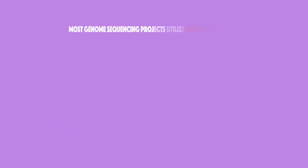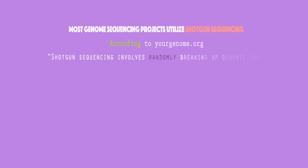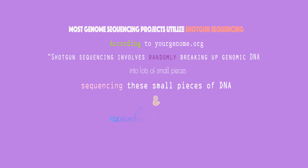Most genome sequencing projects utilize shotgun sequencing. According to yourgenome.org, shotgun sequencing involves randomly breaking up genomic DNA into lots of small pieces, sequencing these small pieces of DNA, and then reassembling the sequence by looking for regions of overlap.